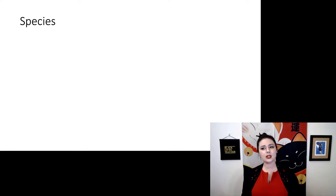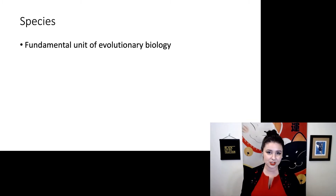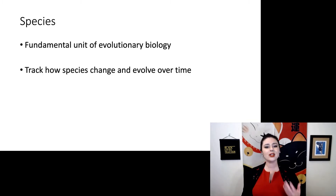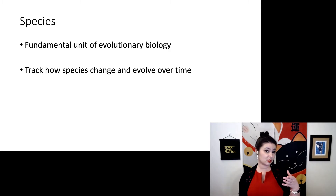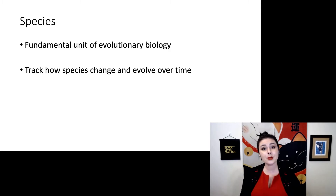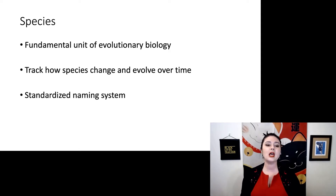So right now we're talking about names for species. This is the fundamental unit of evolutionary biology — we look at how they change and evolve over time. Some people look at change within one species; others look at how species can transform into brand new ones over larger periods of change. And here we have a standardized naming system.